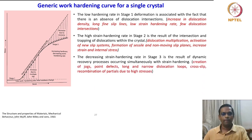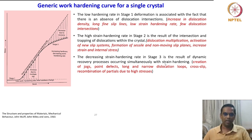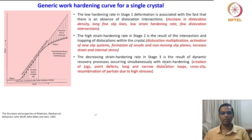In Stage 3, the decreasing strain hardening rate is a result of dynamic recovery occurring simultaneously with strain hardening. Dynamic recovery acts as a strain softening mechanism — it is the opposite of strain hardening. The primary or key signatures of Stage 3 are: creation of jogs, point defects, long and narrow dislocation loops, dislocation cross-slip, and recombination due to high stresses.